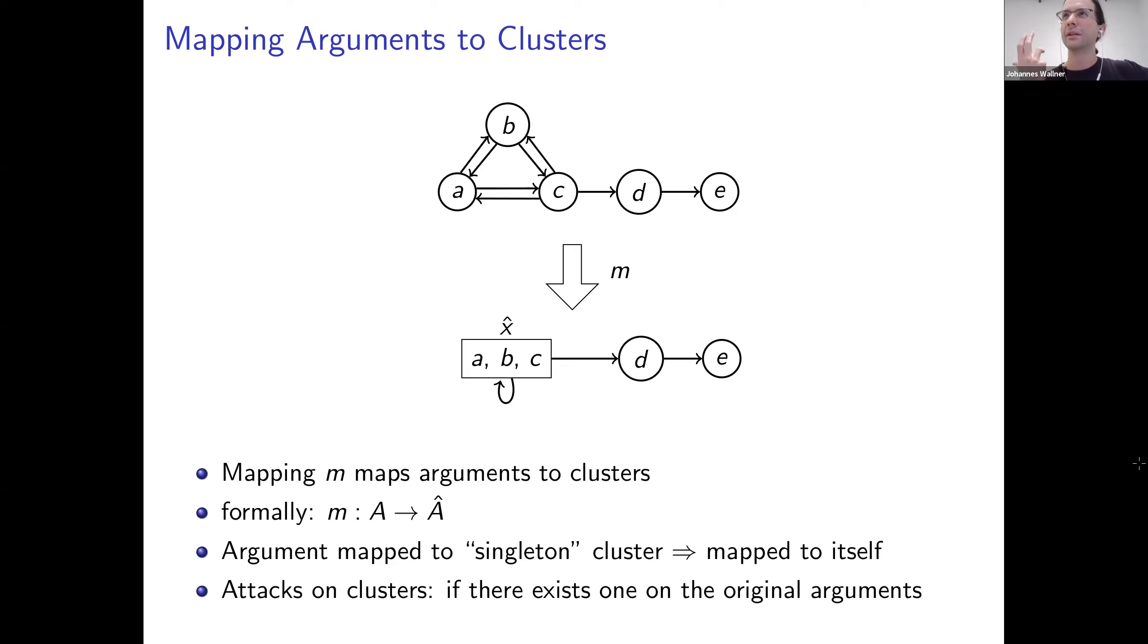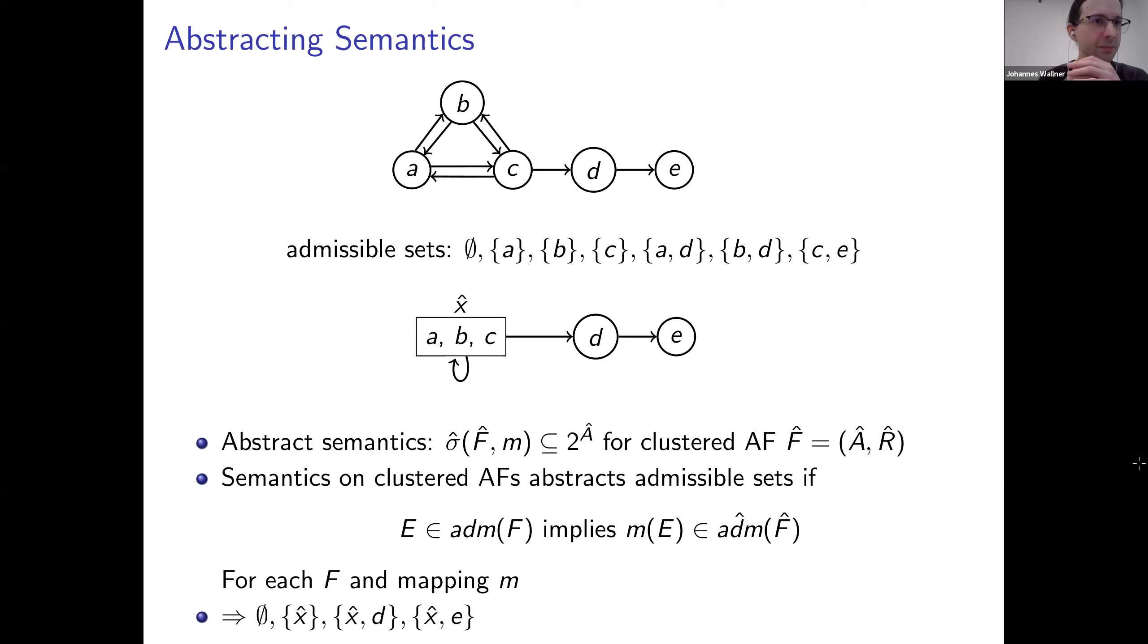Now a question that arises: how can we interpret such clusters, such clustered argumentation frameworks? Well, what we follow is the approach that we actually look for counterparts of the classical argumentation framework semantics. So we abstract also the semantics and lead to new semantics on the clustered argumentation frameworks. Such an abstract semantics is, for instance, noted here by this head sigma function. It takes as input a clustered argumentation framework, like this one here where we have three clusters: head X, D, and E. It also takes as input the mapping, so for instance that we know that here there are three arguments inside the cluster, this is a singleton cluster, and this is also a singleton cluster.